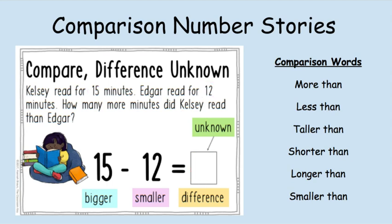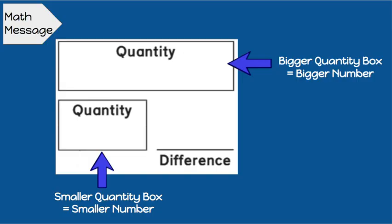So let's try and look at what we're going to be using. This is called a comparison diagram. Now we've learned about part-part-whole diagrams, and we've learned about our change-to diagram. With this one, this is where we are going to try to compare numbers. Our bigger number will always go here. Our smaller quantity number will always go here.